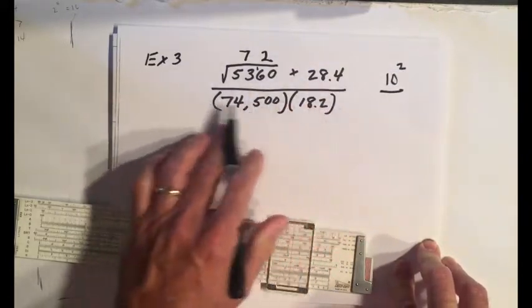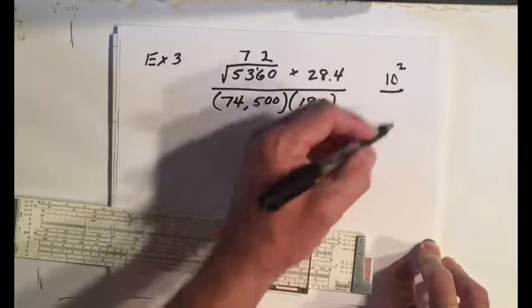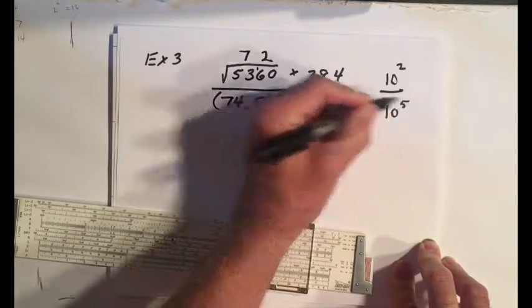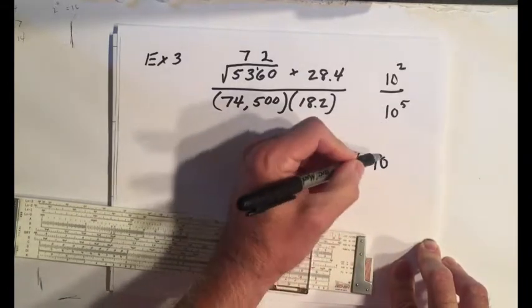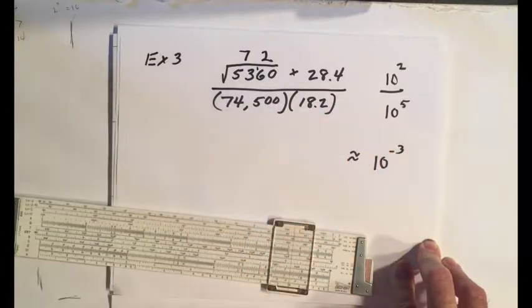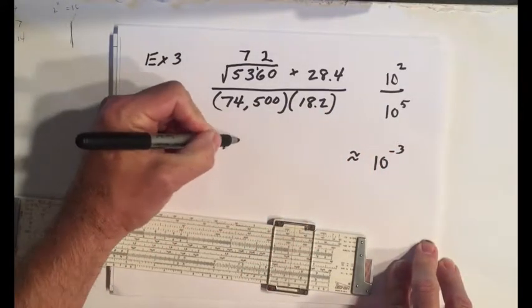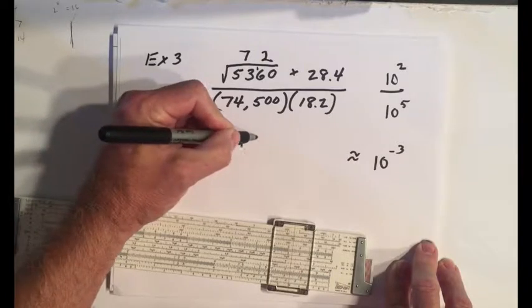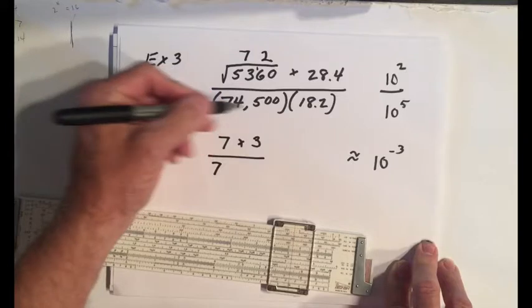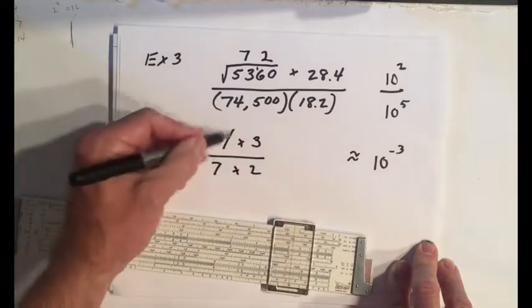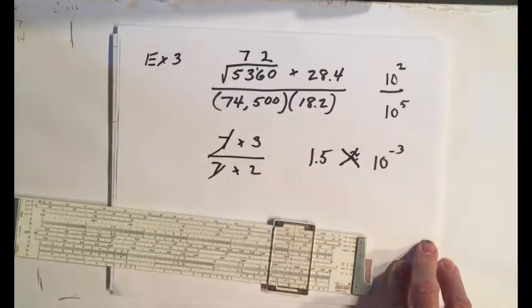So 1 plus 1 is 10 to the 2. And then down here, we don't have any roots. It's pretty easy. It's 3, 4 plus 1 is 10 to the 5. So I know that at least the exponents are going to be 10 to the minus 3. Now I just go through the same guesstimation I did before. 28.4 is close to 3, that's close to 7, close to 2. 7 cancels. And I get 1.5 times 10 to the minus 3.